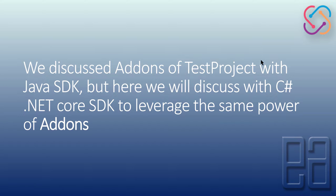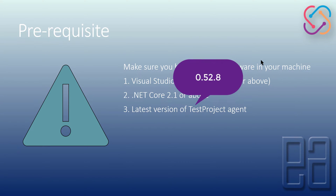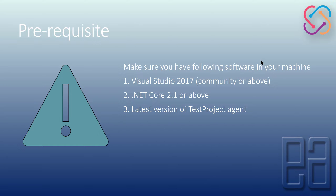The add-ons deliver the same power as TestProject add-ons and the prerequisites for add-on creation are pretty much the same as before. You can have Visual Studio 2017 or above — Visual Studio 2019 was recently released, so if you have VS 2019 Community Edition you can use that. You also need .NET Core 2.1 or above. The latest version of the TestProject agent has also been released — version 0.52 was released yesterday — and there are many new features within that agent.